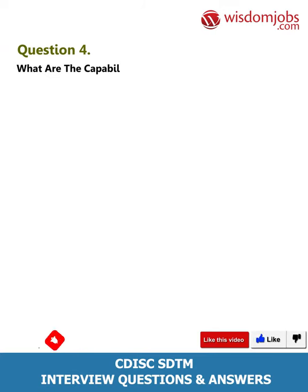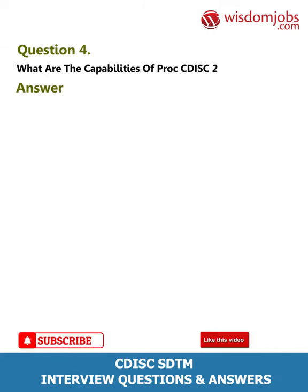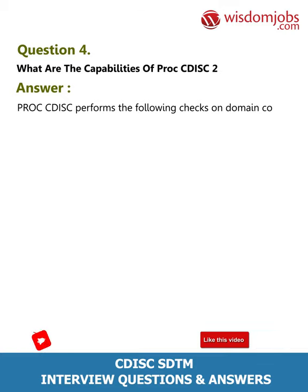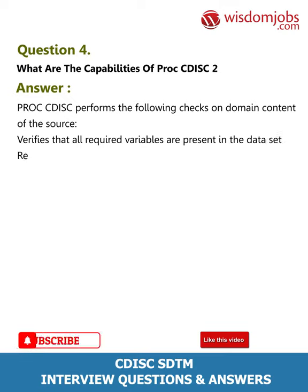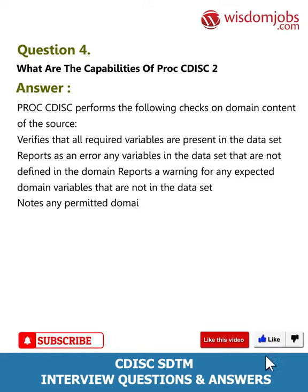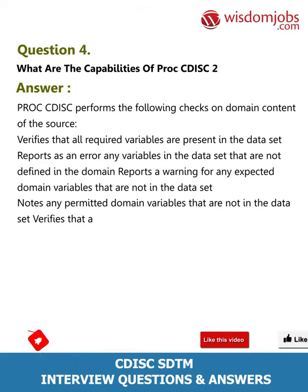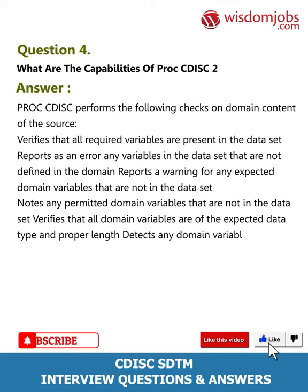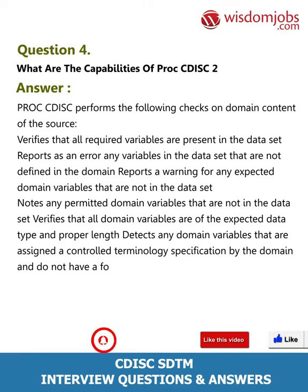Question 4: What are the capabilities of PROC CDISC? Answer: PROC CDISC performs the following checks on domain content: verifies that all required variables are present in the data set; reports an error for any variables in the data set not defined in the domain; reports a warning for any expected domain variables not in the data set; notes any permitted domain variables not in the data set; verifies that all domain variables are of the expected data type and proper length; and detects any domain variables assigned a controlled terminology specification that do not have a format assigned.